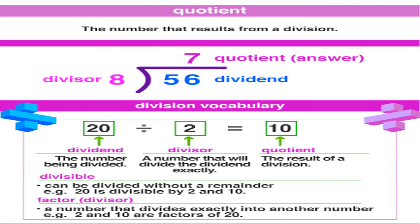The quotient is the number that results from a division. For example, 56 divided by 8: how many 8s are in 56? The answer is 7, so 7 is the quotient. To summarise the vocabulary: 20 divided by 2 equals 10 — 20 is the dividend, 2 is the divisor, and 10 is the quotient. The divisor is a number that divides the dividend exactly, and the quotient is the result of a division.